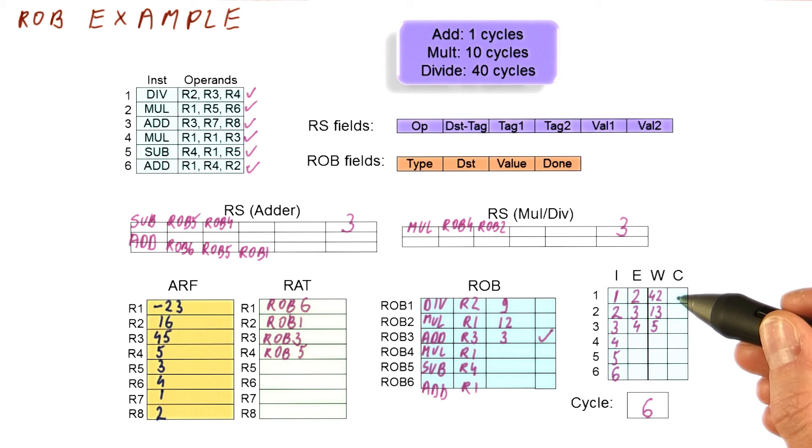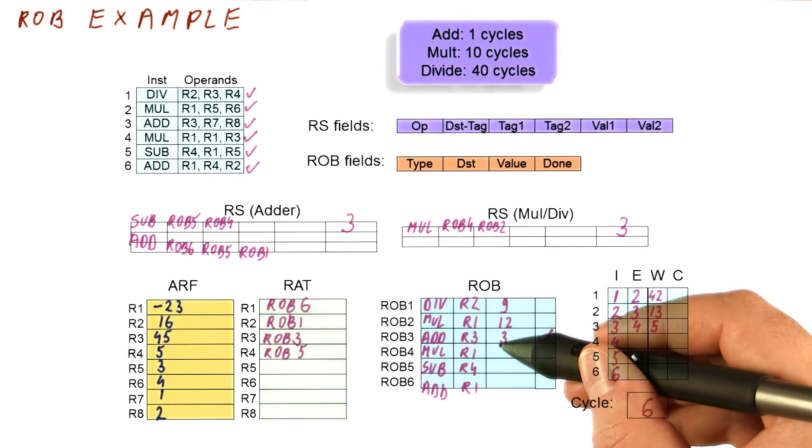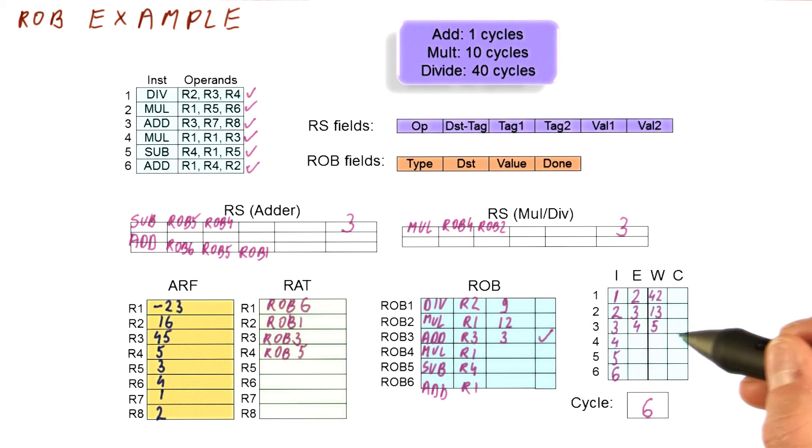So although this instruction would commit in six if everything else was committed already, it will actually not commit until at least cycle 43 or 4 or 5. So pretty much this instruction sits here as done. Others can use its result, but it cannot really commit until we commit the instructions one and two.